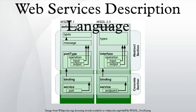The Web Services Description Language is an XML-based interface definition language that is used for describing the functionality offered by a web service. The acronym is also used for any specific WSDL description of a web service, which provides a machine-readable description of how the service can be called, what parameters it expects, and what data structures it returns. It thus serves a purpose that corresponds roughly to that of a method signature in a programming language.